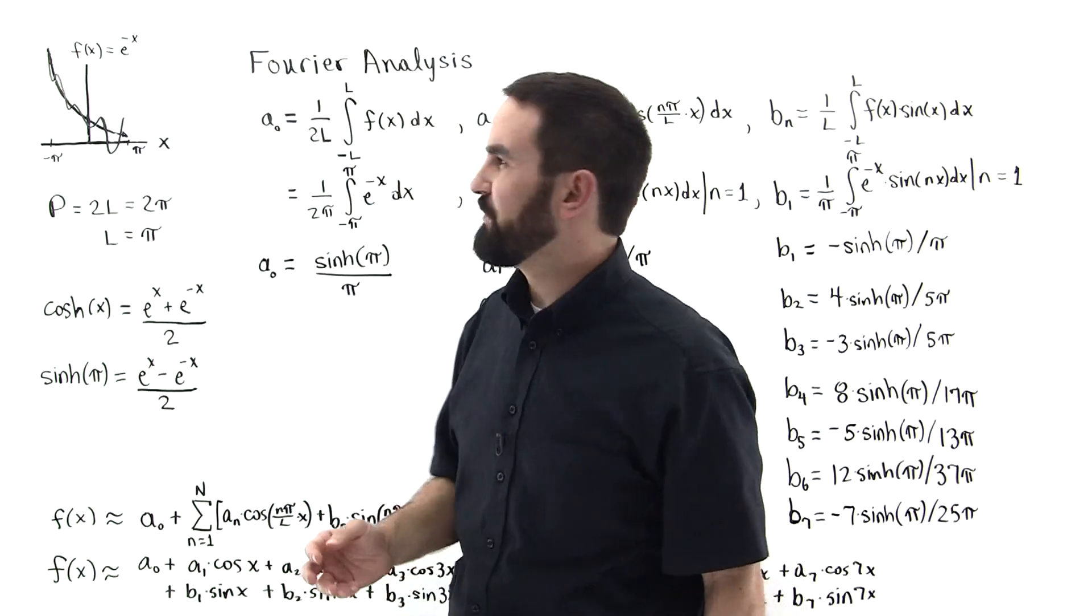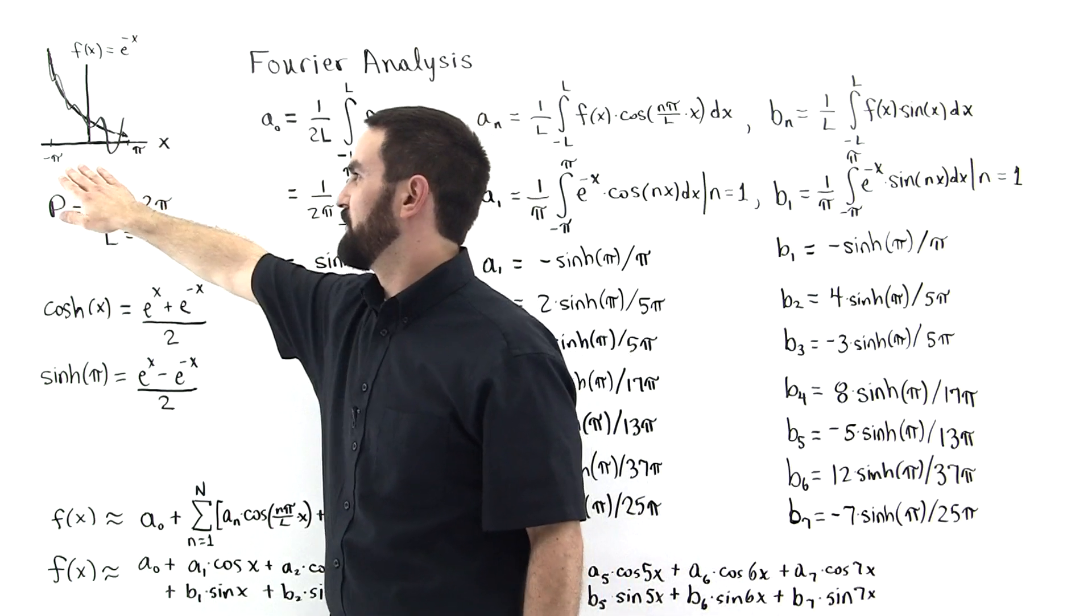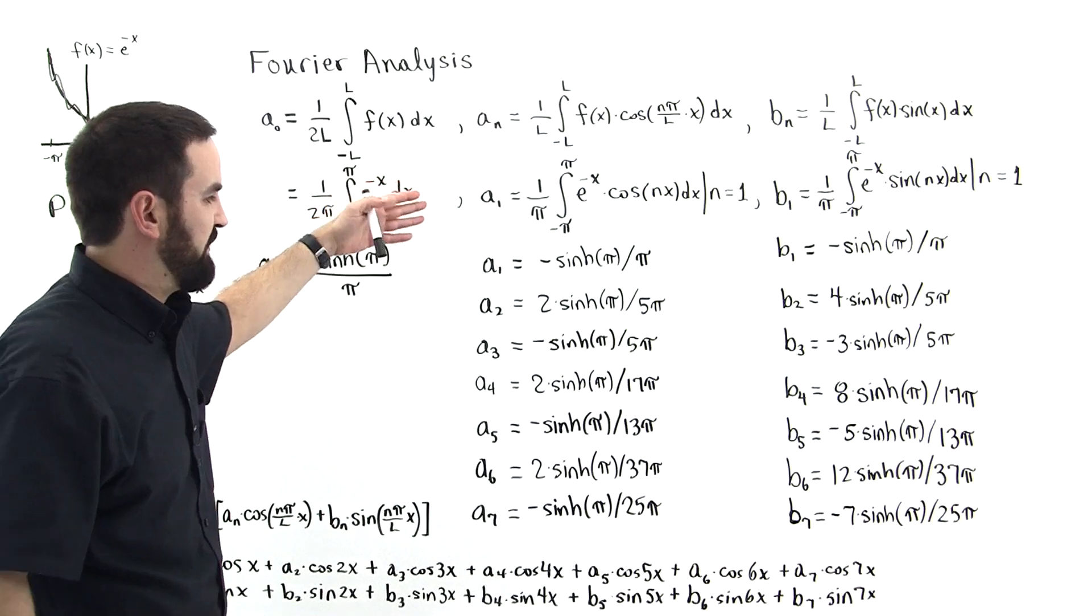In the previous tutorial, where we used the Fourier analysis to model the function e to the minus x over the interval from negative pi to pi, the coefficients are defined as follows.